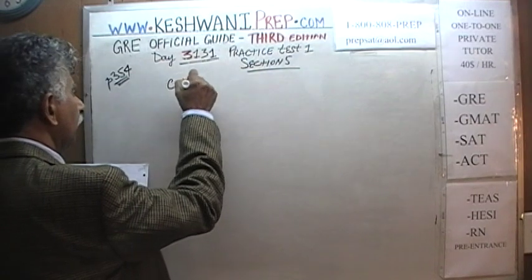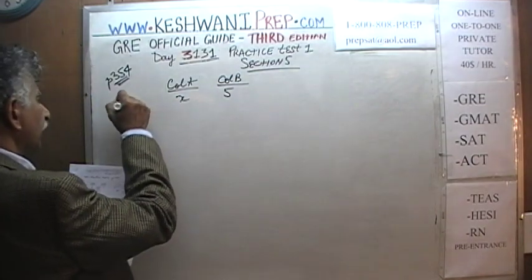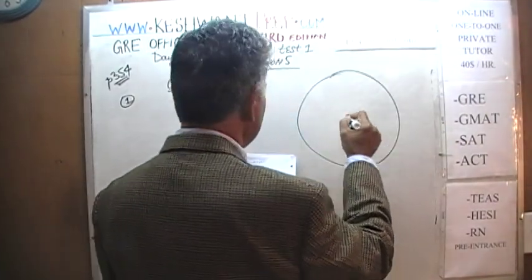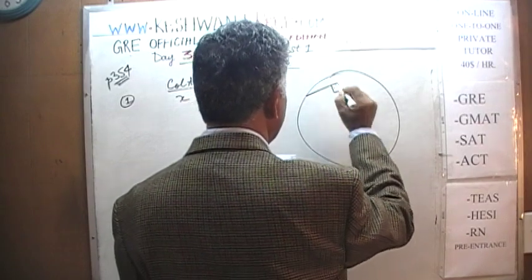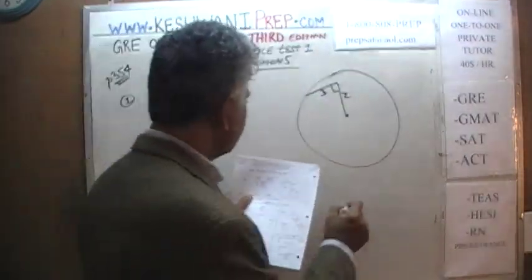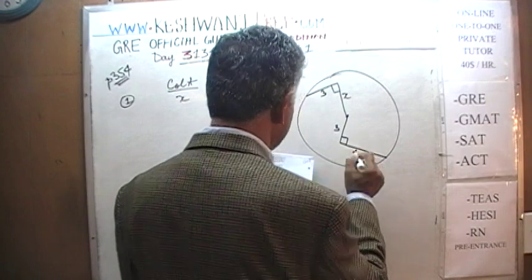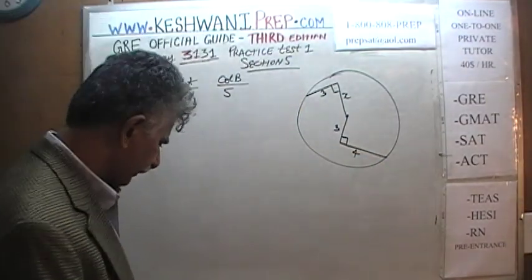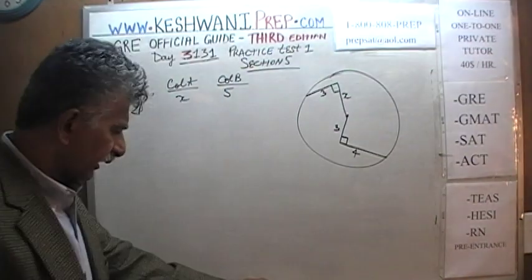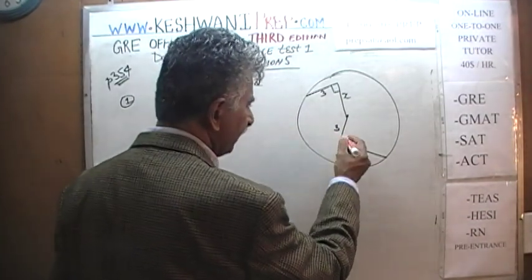It's a quantitative comparison question. In column A we have quantity X, and in column B we have 5. We are given a circle, and inside the circle we have a triangle. It makes a 90-degree angle, and we are told that one side is 3 and another is X. We are also given a second triangle that makes a 90-degree angle, with sides 4 and 5.